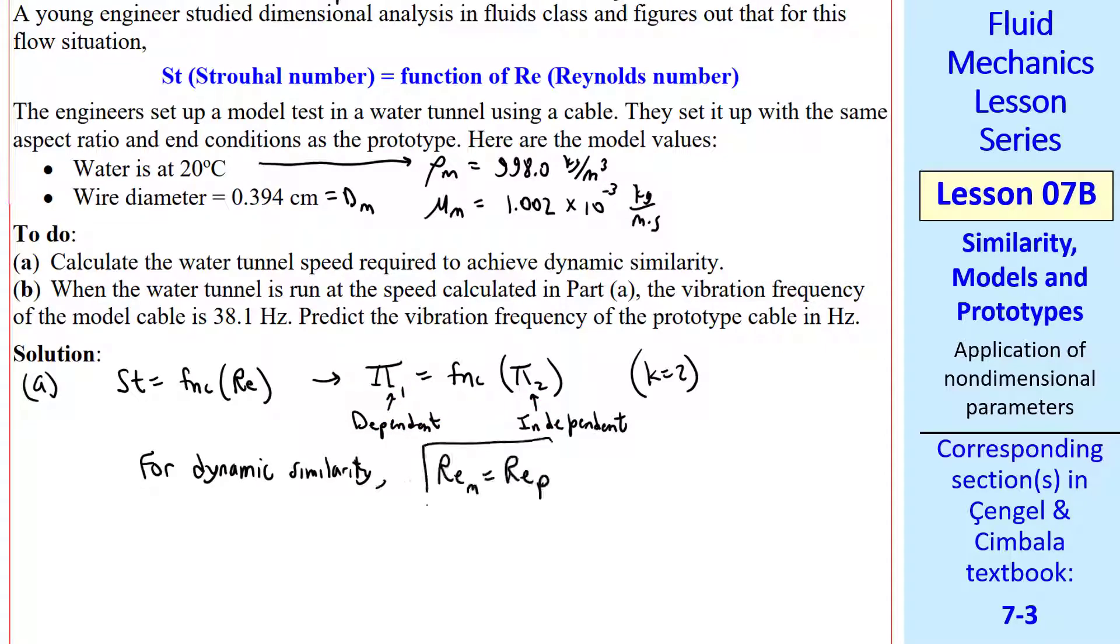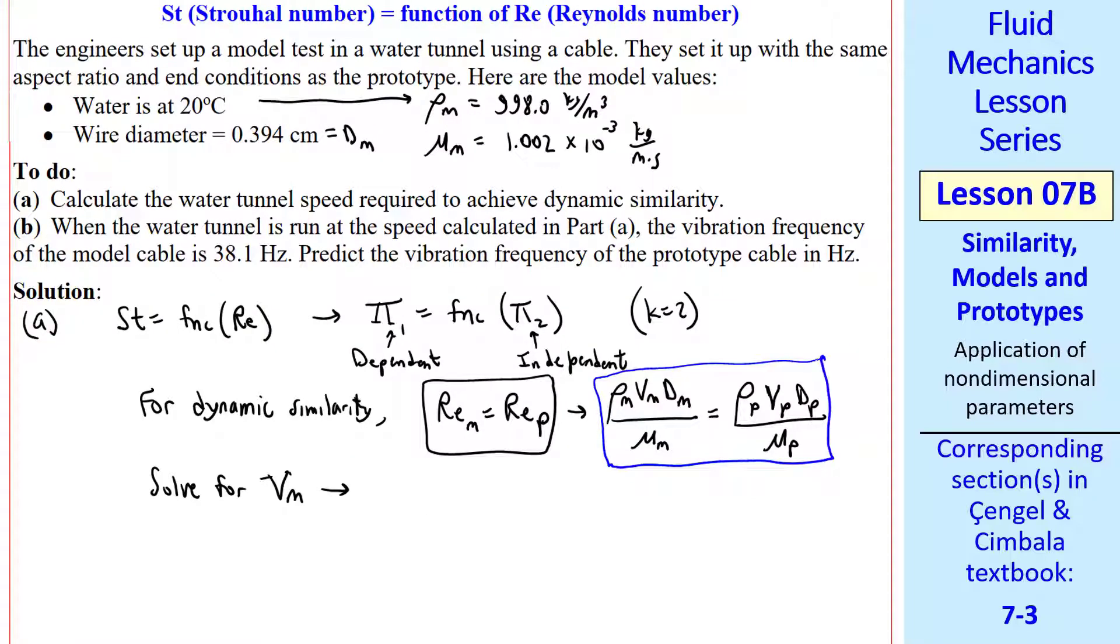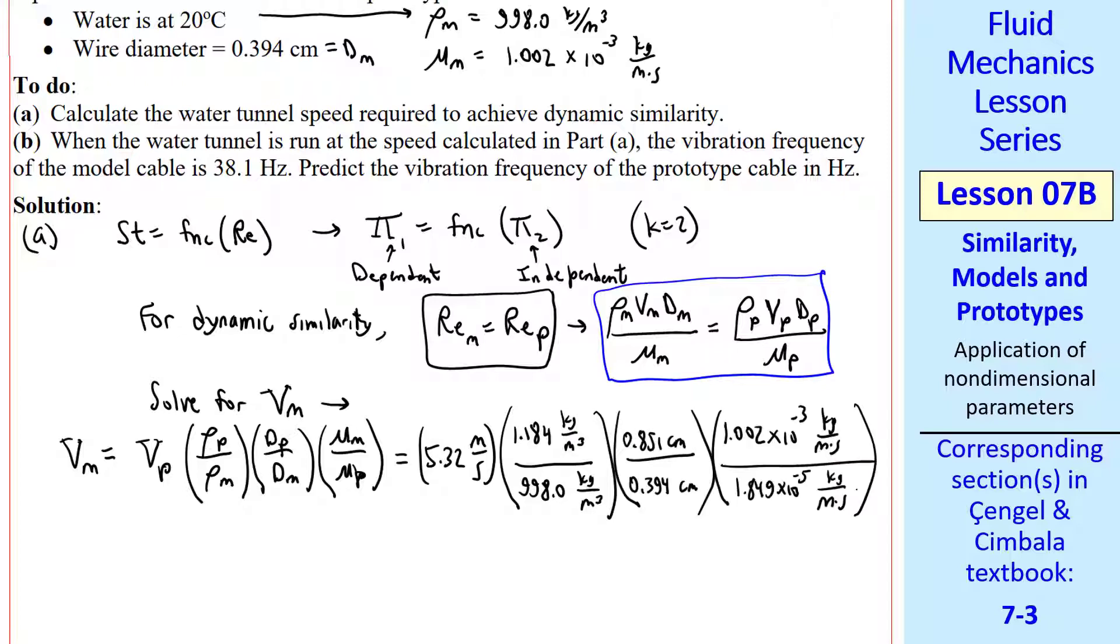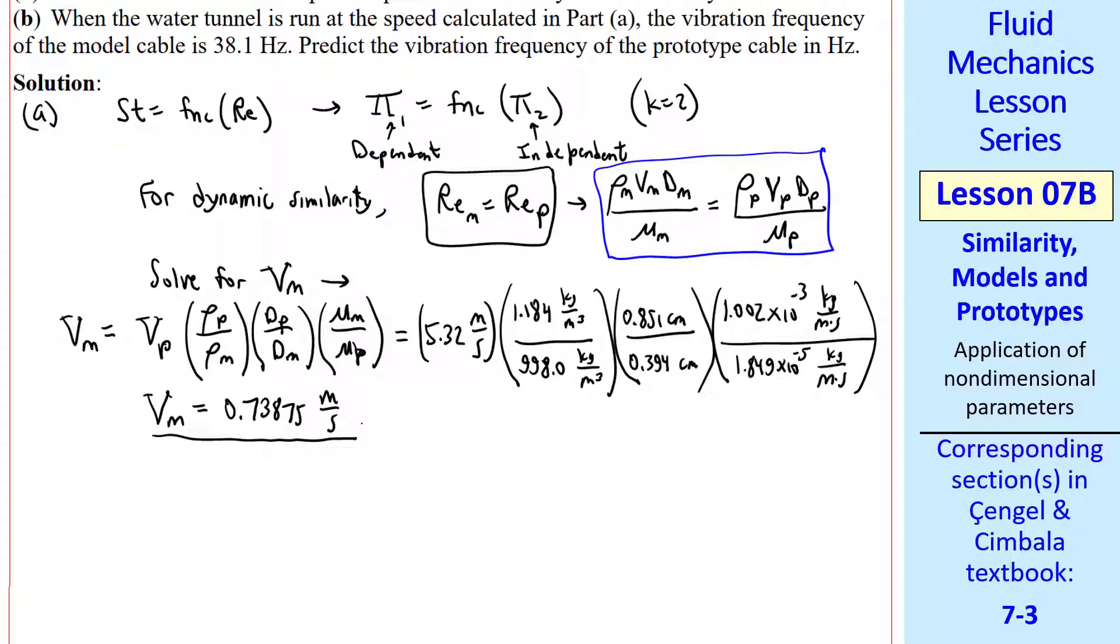For dynamic similarity, we set the two Reynolds numbers the same, which means the Reynolds number of the model must match the Reynolds number of the prototype. We can solve this equation for Vm. Vm equal Vp times, now here it's good to use ratios of common variables, rho p over rho m, dp over dm, and mu m over mu p. This one's different than the other two since mu is in the denominator when you do the algebra. Now we plug in our values, Vp, rho p over rho m, dp over dm, and mu m over mu p. My calculator gives 0.73875 meters per second.